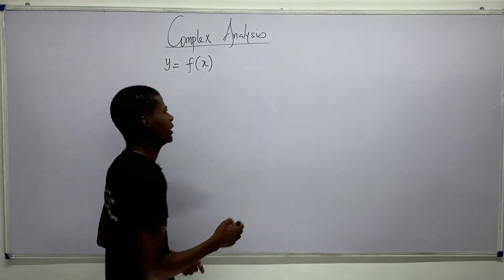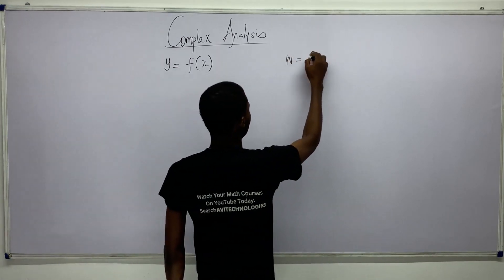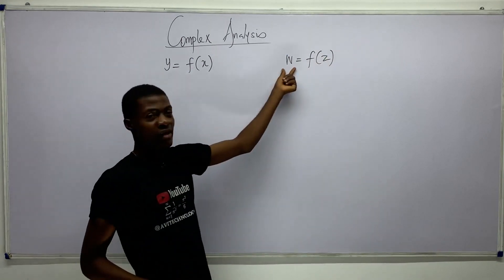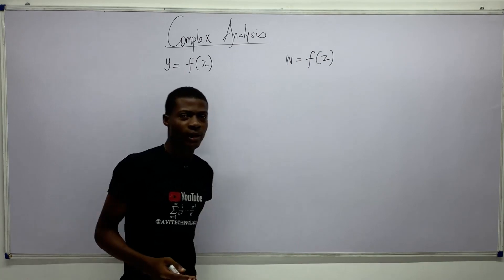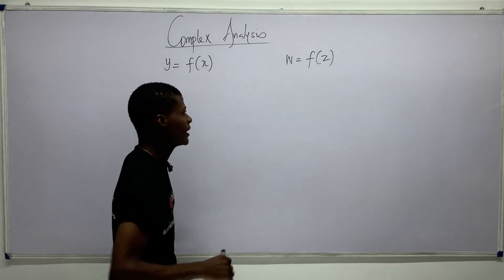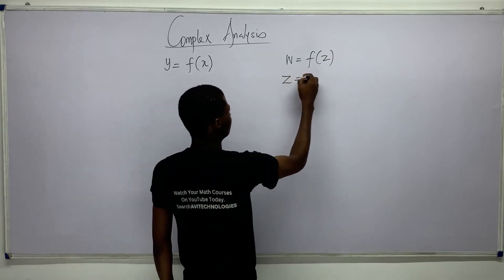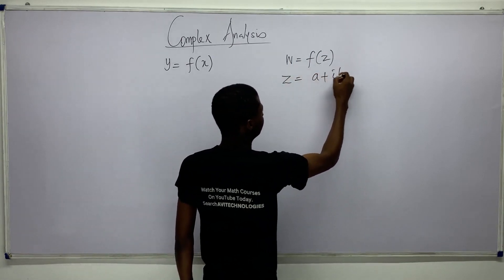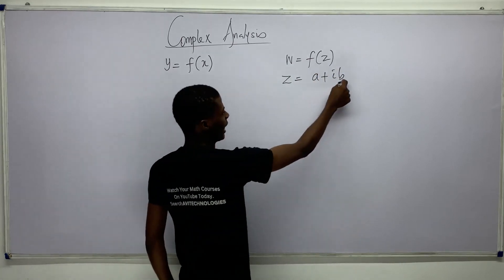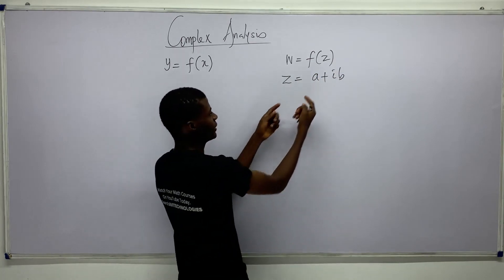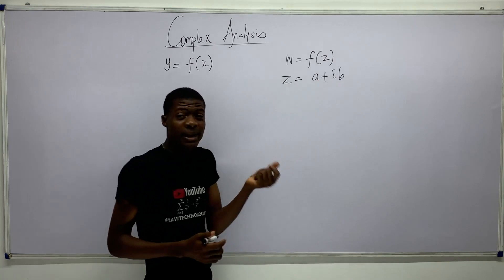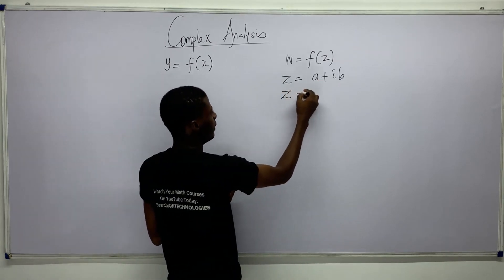But what if we had a complex value? Let's say w equals f of z. Note that just as we have y here, we have w. When we talk about complex analysis, this becomes f of z. Remember when dealing with complex numbers we said z equals a plus ib, where a and b are real numbers — a is the real part and ib is the imaginary part.